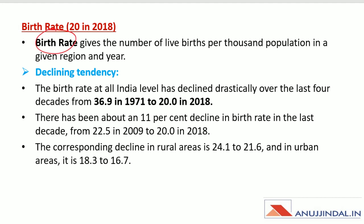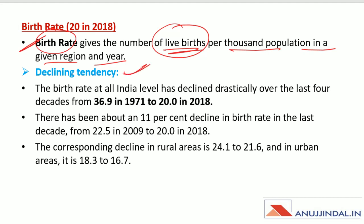Birth rate gives the number of live births per thousand population in a given region and year. There has been a declining tendency: in 1971 the birth rate was 36.9, while in 2018 it is 20. There has been about an 11% decline in birth rate in the last decade — from 22.5 in 2009 to 20 in 2018.